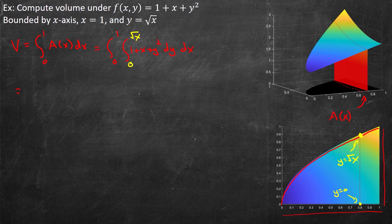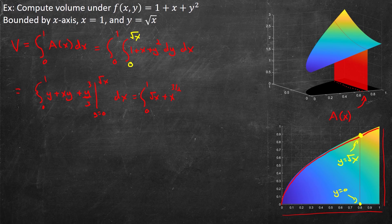Now that the integral is set up, I keep the outer integral from 0 to 1 and compute the inside integral with respect to y: 1 becomes y, x becomes xy (it's a constant), and y squared becomes y cubed over 3. Evaluating between y equal to 0 and y equal to square root of x, I plug in square root of x everywhere: y becomes √x, xy becomes x to the 3/2, and (√x)³ over 3 is also x to the 3/2 over 3.